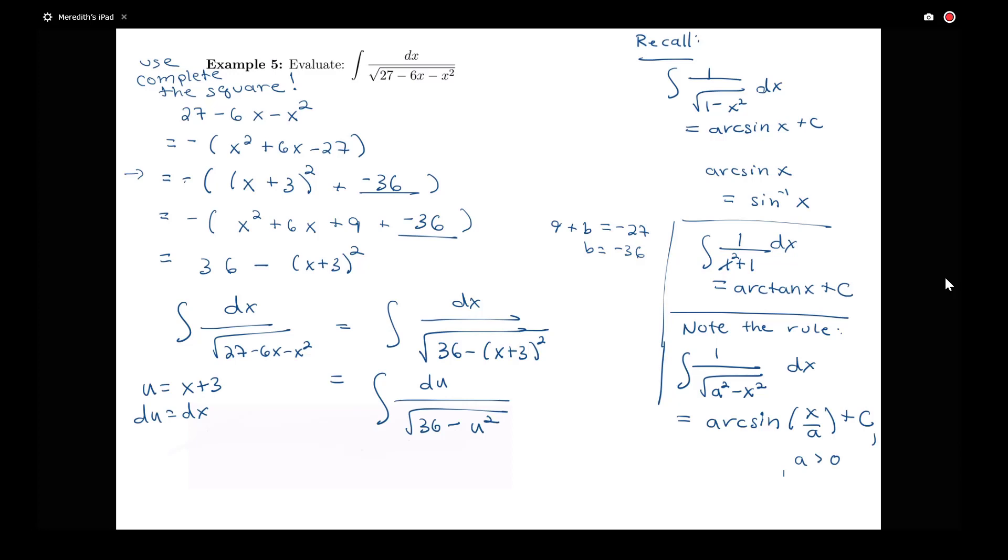So notice that if I have 36 here, when matching this to the form of a squared minus my variable x squared here, my a is equal to 6. So what does that mean here? That means that I've got arc sine of u over 6 plus c as my antiderivative here. And then I can just put this back in terms of x where my u was equal to x plus 3. So I have arc sine of x plus 3 over 6 plus c.